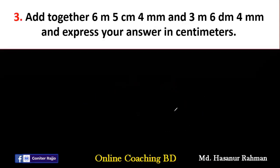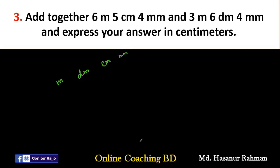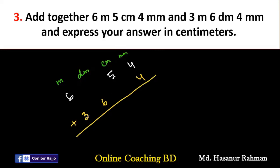Number three: add together six meters, five centimeters, four millimeters and three meters, six decimeters, four millimeters, then express the answer in centimeters. We set up a table with columns for meter, decimeter, centimeter, and millimeter. Adding: four plus four millimeters equals eight, only five in the centimeter column, only six in the decimeter column, and six plus three meters equals nine. This gives nine meters, six decimeters, five centimeters, and eight millimeters.